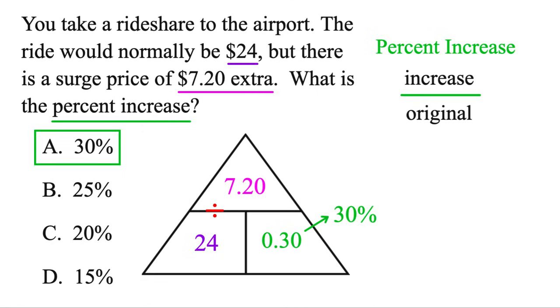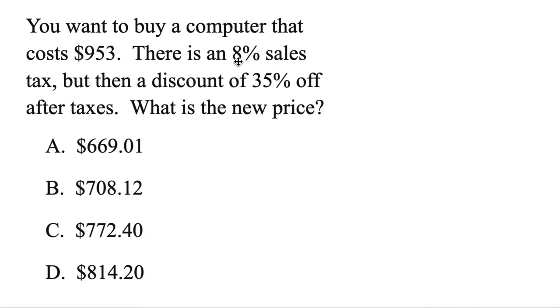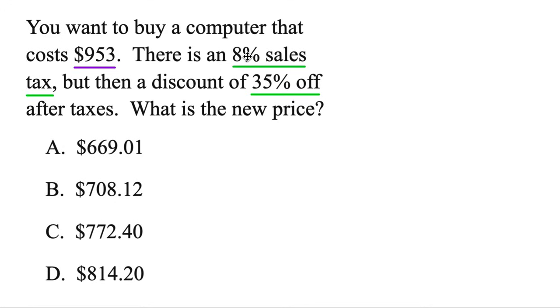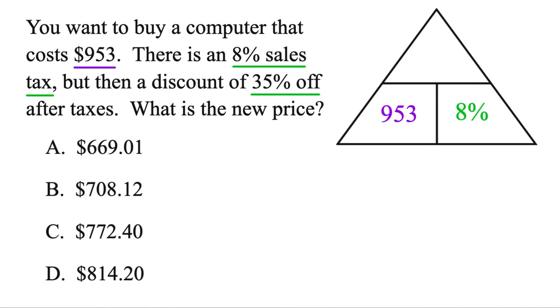Okay, let's do one final one. Because you may have a problem with two percents in it. You want to buy a computer, it's $953. There's an 8% sales tax, and then a discount 35% off after taxes. What is the new price? Well, anytime you're given two percents, you're going to draw two separate triangles, but let's just start with the first one. And we have our total bottom left, we've got our percent bottom right. So let's calculate the sales tax.